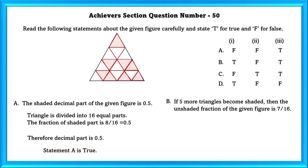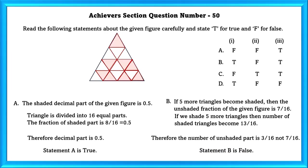B: If five more triangles become shaded then the unshaded fraction of the given figure is 7 by 16. If we shade five more triangles then the number of shaded triangles become 13 by 16, therefore the number of unshaded part is 3 by 16 not 7 by 16, so statement B is false.